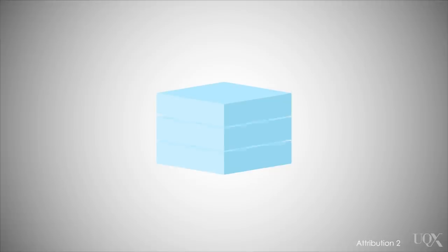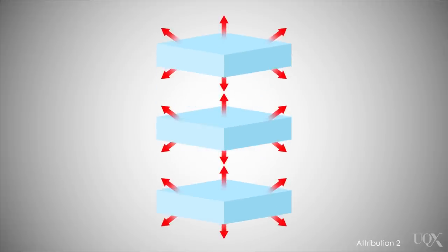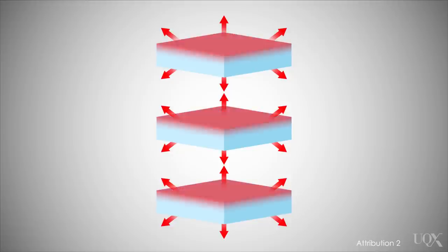It's useful to think of the atmosphere as layers. Each layer of the atmosphere has a greenhouse glow in every direction. Meanwhile, each layer absorbs some of the infrared glow that comes from the layer above, and some from the layer below.